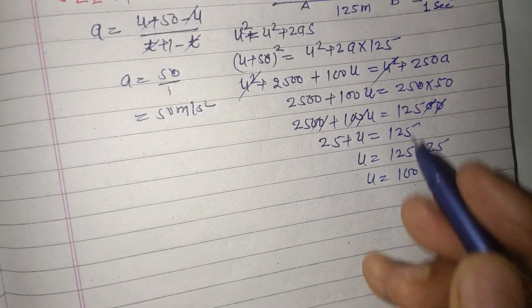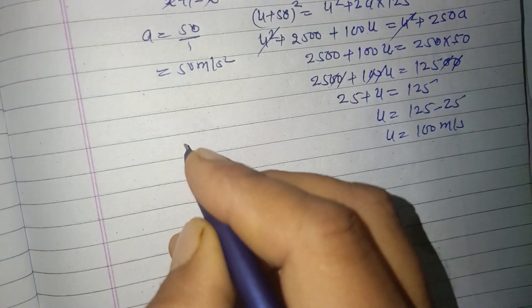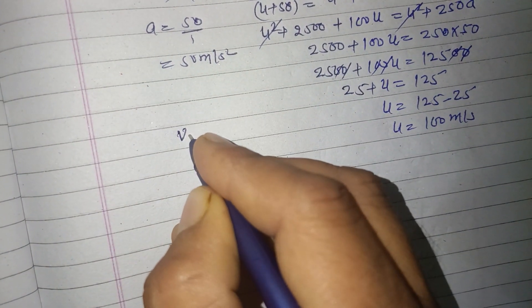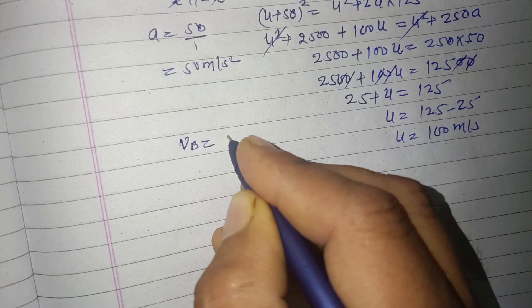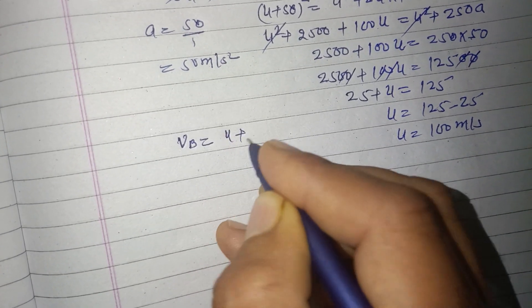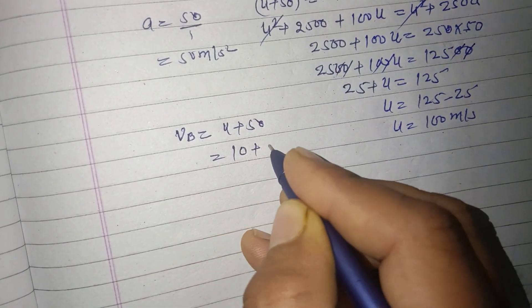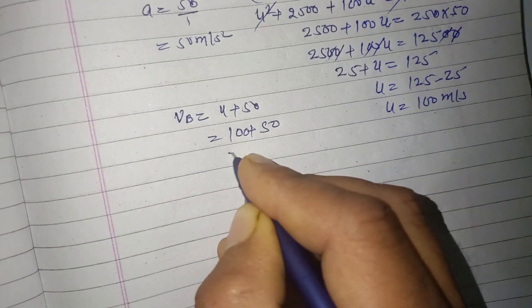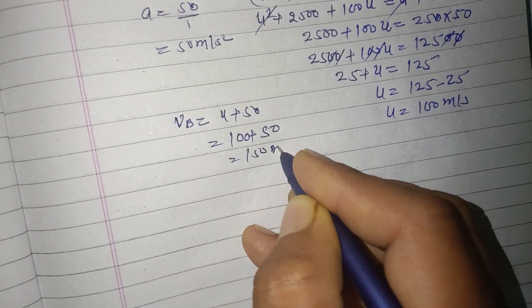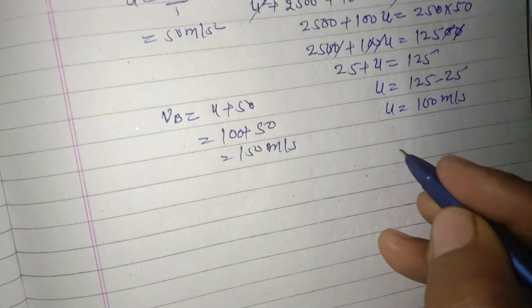The velocity at point B is u + 50, which is 150 m/s.